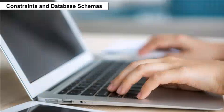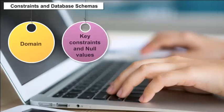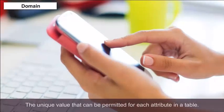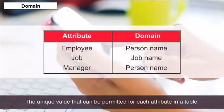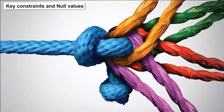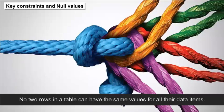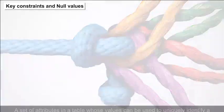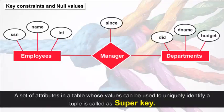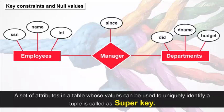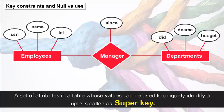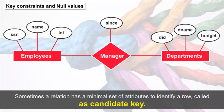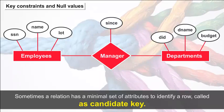Constraints and Database Schemas — we can specify four constraints in relational databases. Domain — the unique value that can be permitted for each attribute in a table. Key Constraints and Null Values — no two rows in a table can have the same values for all their data items. A set of attributes whose values can uniquely identify a tuple is called a super key. Sometimes a relation has a minimal set of attributes to identify a row, called a candidate key.